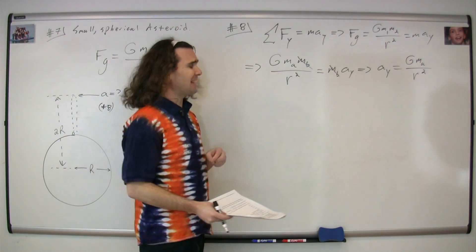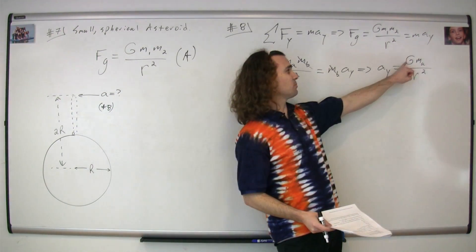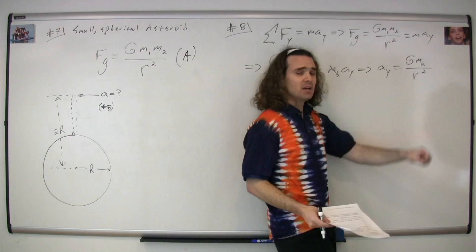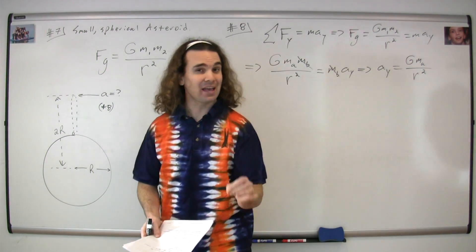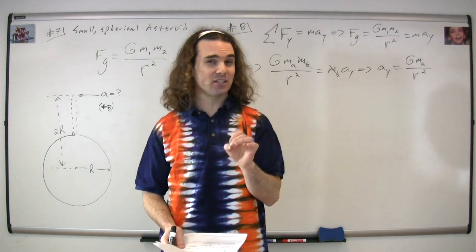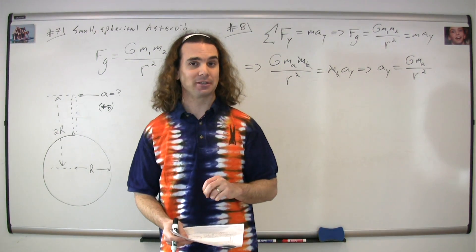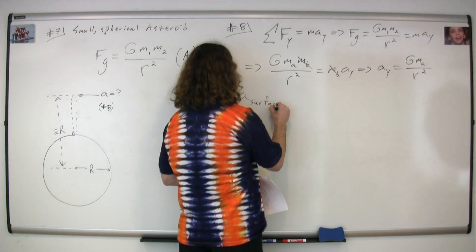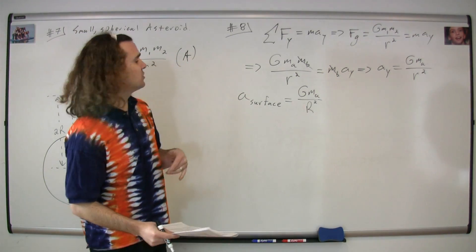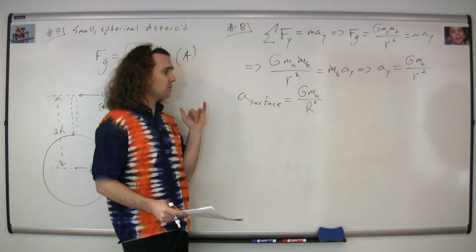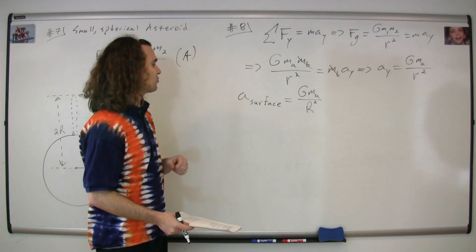We get the acceleration in the y direction equals big G times the mass of the asteroid divided by r squared, where r is the distance between the centers of mass of the two objects. Now you can see in the problem that we need to know the acceleration acting on the surface of the asteroid.